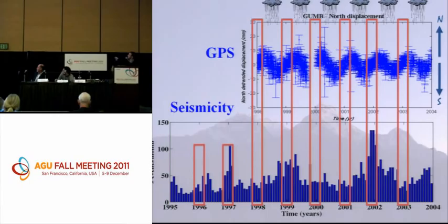This shows what I was saying: in the summer, the stations are moving to the south, and you see fewer earthquakes than in the winter. In the winter, shown by the red rectangles, the stations are moving to the north, and you see more earthquakes.